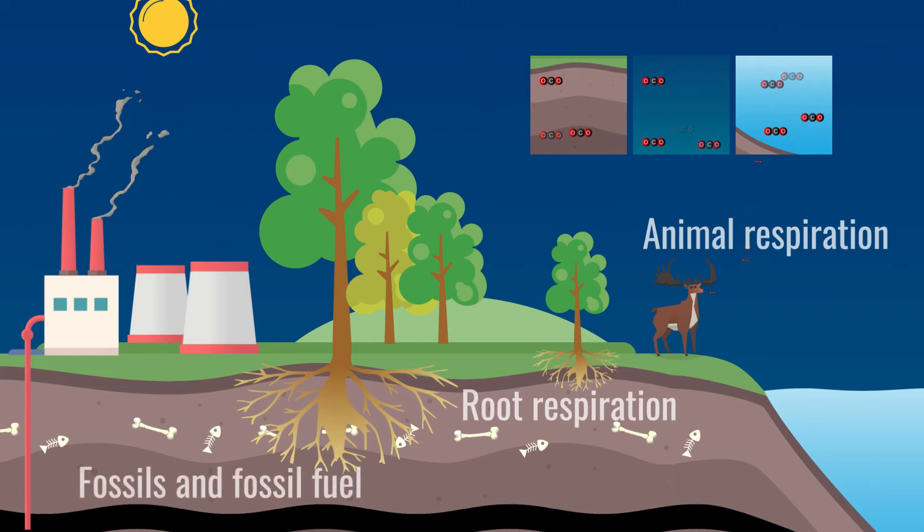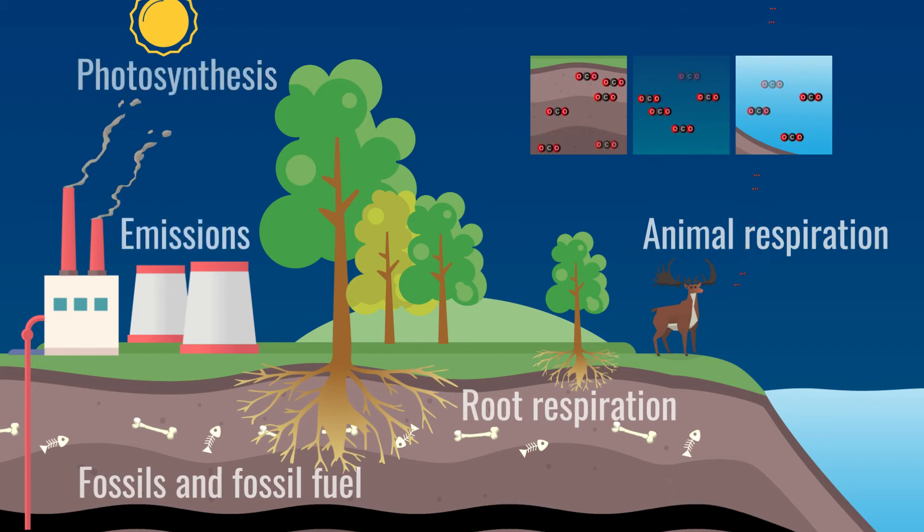However, the carbon in fossil fuels has been underground and isolated from the carbon cycle for millions of years. This carbon, when released into the atmosphere, exceeds the ground's capacity to absorb it, and so the amount in the atmosphere increases over time. Fossil fuel combustion releases about 30 billion tons of carbon dioxide per year.